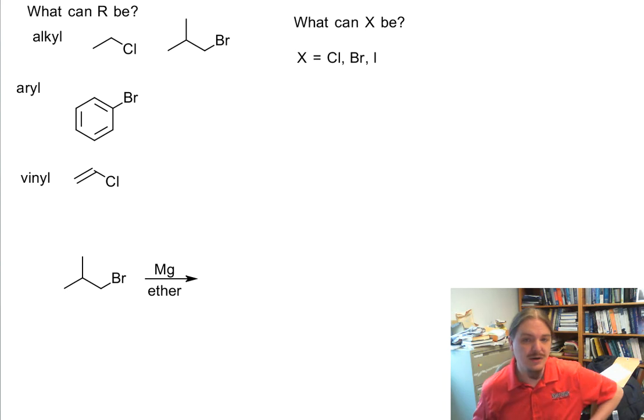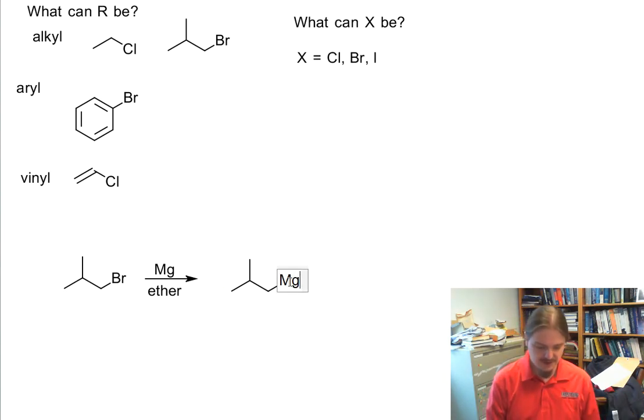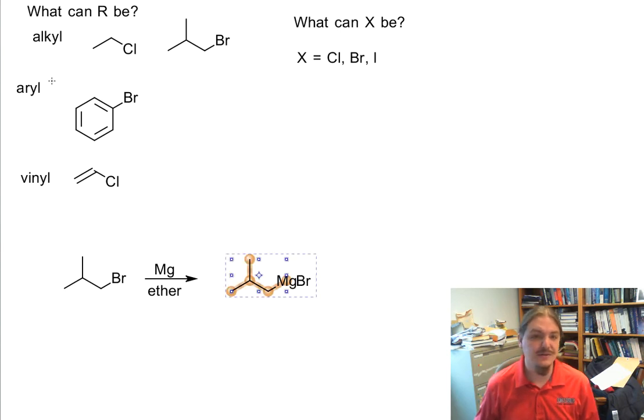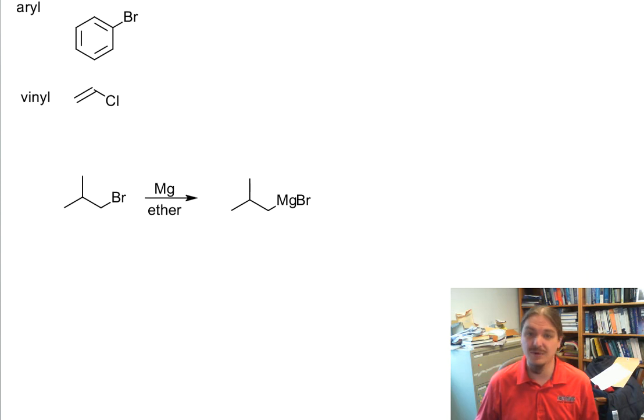In the next video, when I talk about the reactions of Grignard reagents with protic molecules, I'll talk a little bit about the rationale for using ethers as a solvent. The outcome of the reaction is just simply inserting magnesium into the carbon-bromine bond.